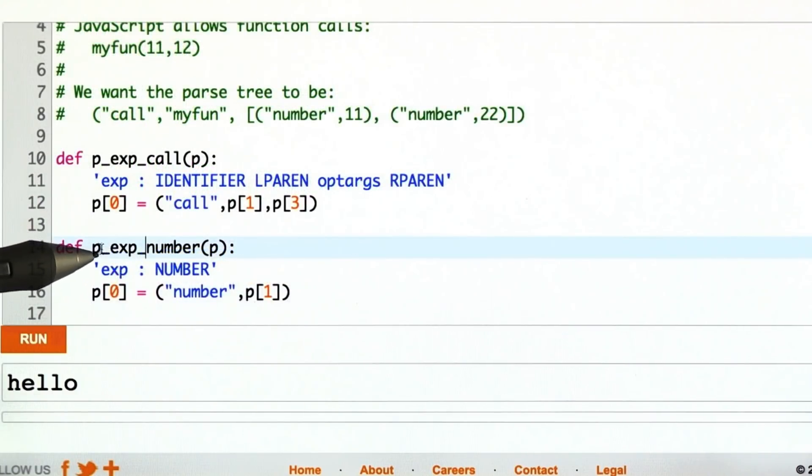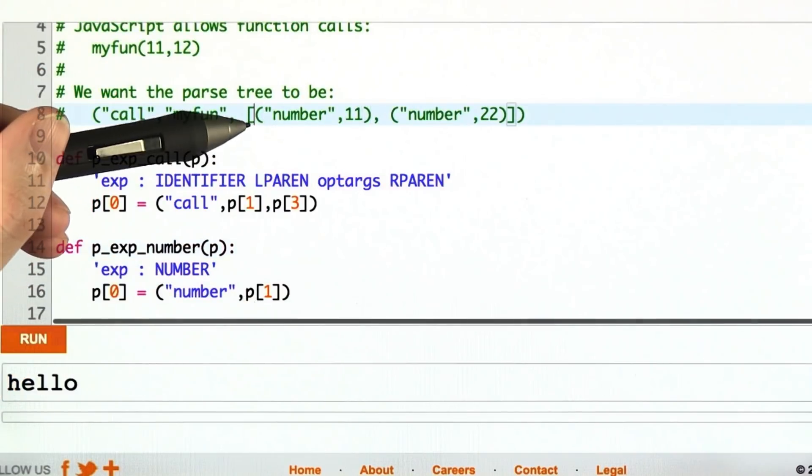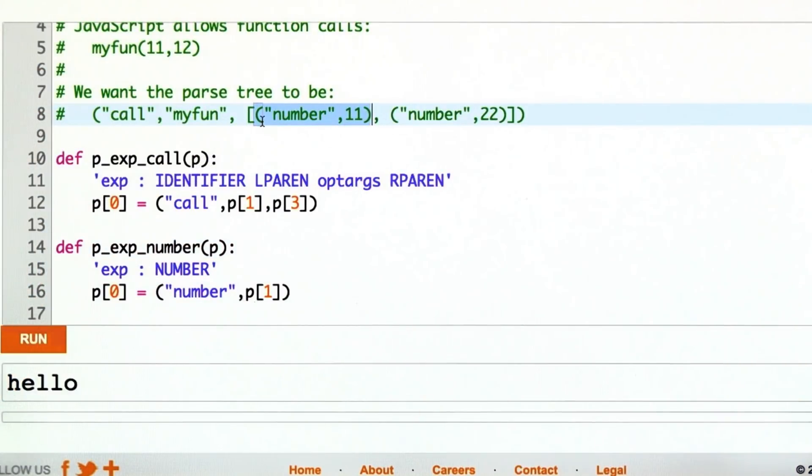Similarly, our rule for expressions that could be numbers, expression can become a number, at which point I just make up this tuple, number, followed by the actual value. And that's how we got things like this for number 11.